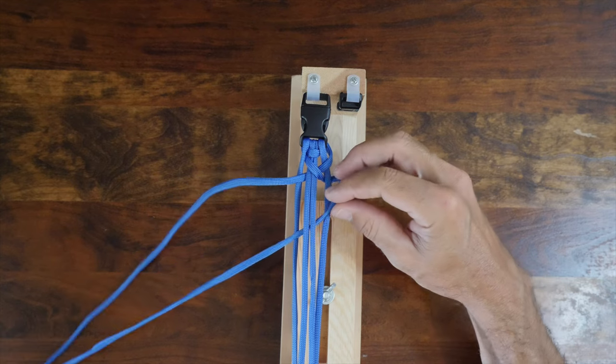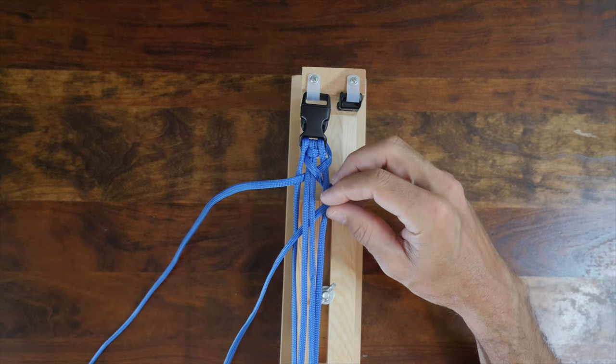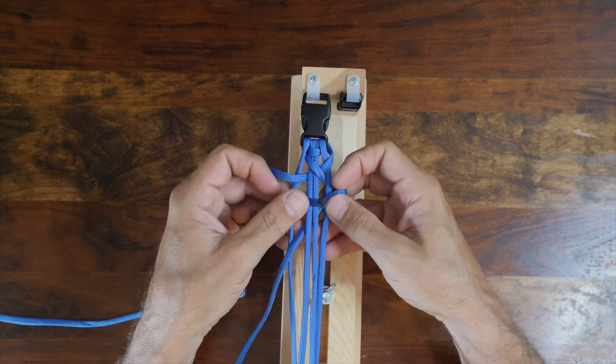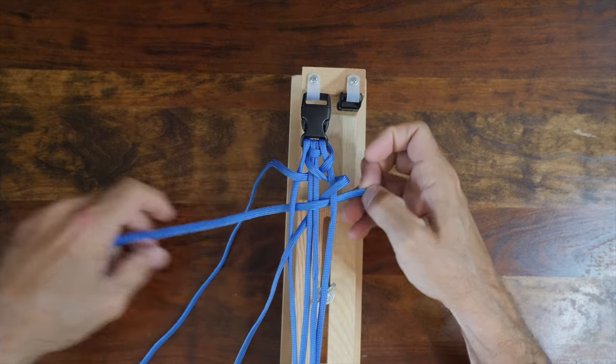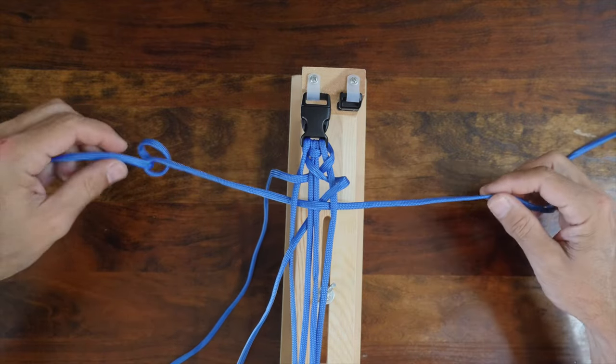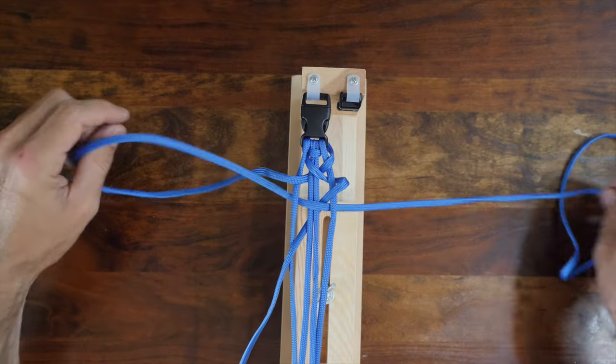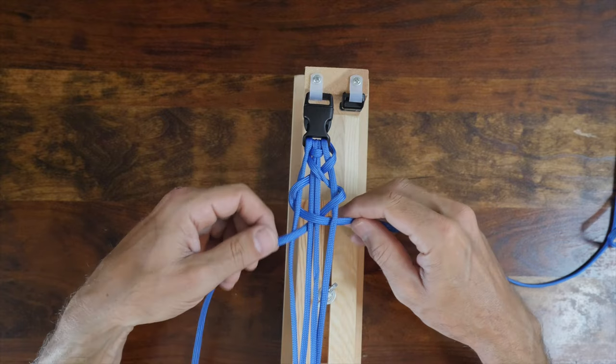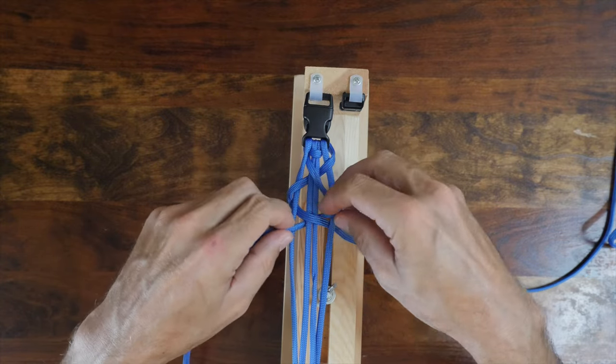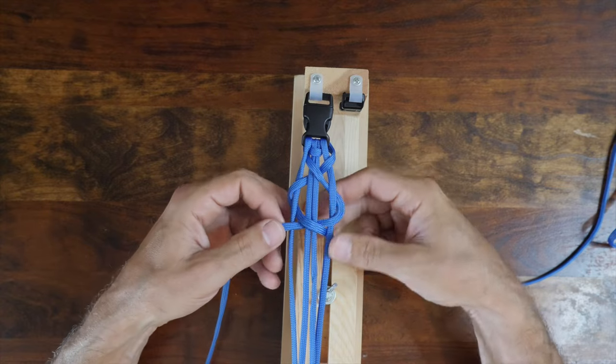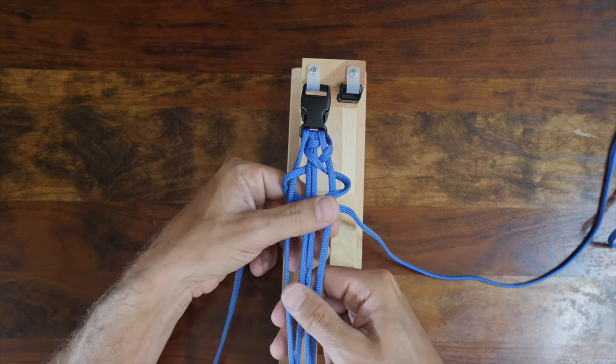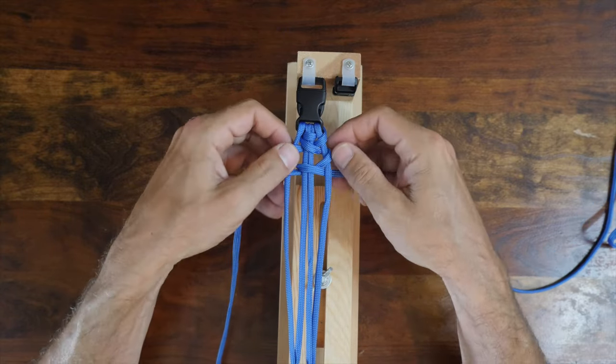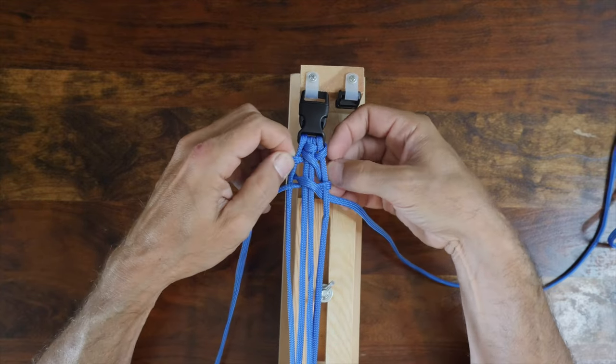So again, the right strand of paracord goes over the right outside cord, under the two center cords, and then over the left outside cord. Followed by the left strand going under the left outside cord, over the two center cords, and then under the right outside cord. Note how the left strand passes over the right strand when you tuck it under. Again, remove any twists that might appear, and keep your work nice and tidy. After each weave, cinch up your knots towards the finished side to prevent too much slack. You want to cinch it up, but not too tight, or the bracelet might be overly stiff.